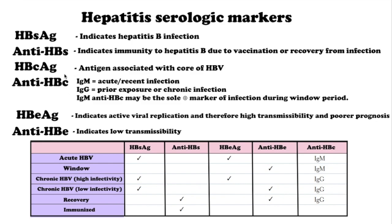Anti-HBc antibodies remain positive indefinitely as a marker of past HBV infection. There are two types: IgM and IgG. A positive IgM result indicates a new acute hepatitis B infection. The IgG antibody blood test remains positive indefinitely as a marker of past HBV infection.